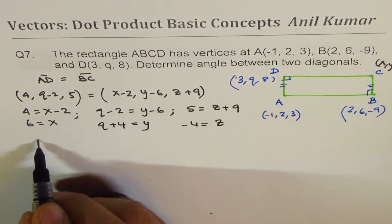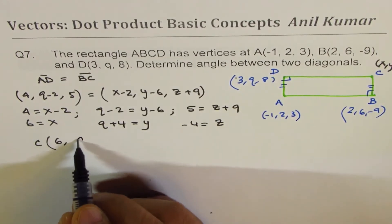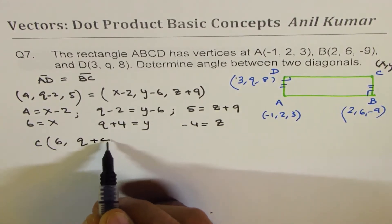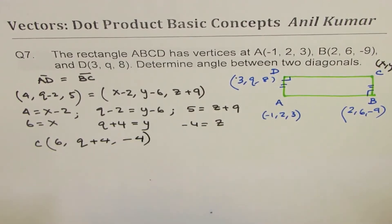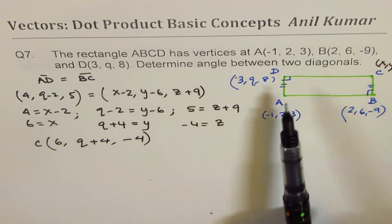So the coordinates for point C basically are (6, Q+4, -4). Now that's the trick part. How do we find Q?